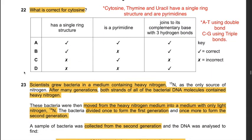Question 22: What is correct for cytosine? Cytosine, thymine, and uracil all have a single ring structure and are pyrimidines. Is cytosine a pyrimidine? Yes. That leaves A or C. Does cytosine have a single ring structure? Yes. Does cytosine join to its complementary base with three hydrogen bonds? Yes - cytosine binds with guanine using triple bonds, while adenine binds with thymine using double bonds. Therefore the answer is A.